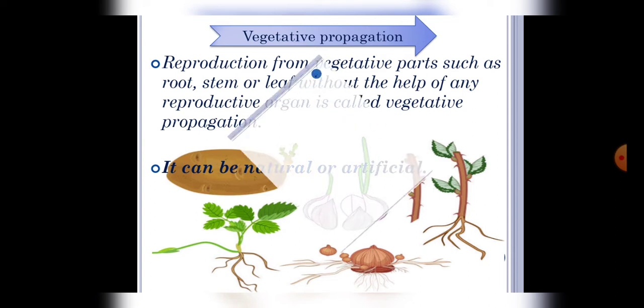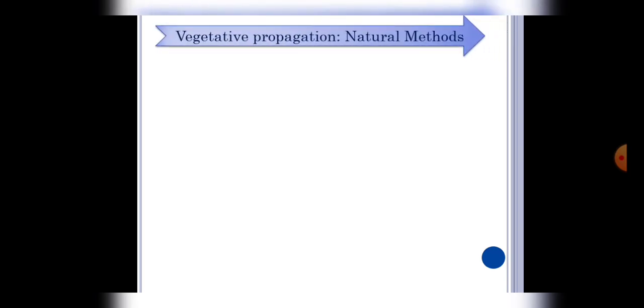So firstly let's see natural method for vegetative propagation by roots. Students, some plants like sweet potato, dahlia, they have swollen roots which store food. When these are planted in soil, new plants start to develop from them.